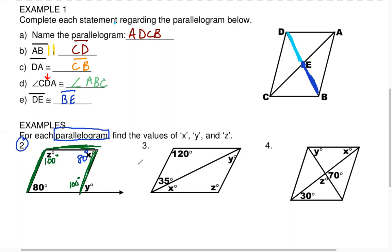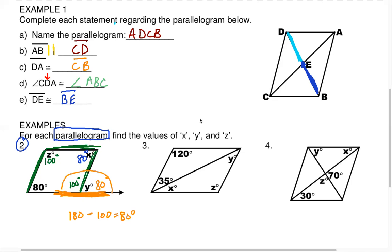Finally, how do you find Y, which is on the exterior of the parallelogram? A linear pair or supplementary angles on a straight line must always equal 180. We already have 100 here, so 180 minus 100 leaves you with 80. Y has to be 80 degrees because these two must be supplementary.